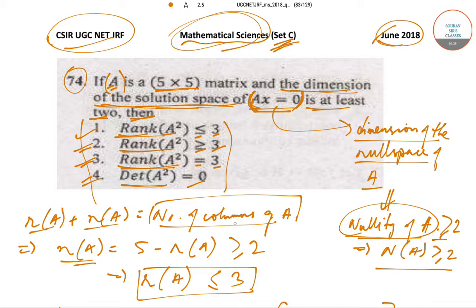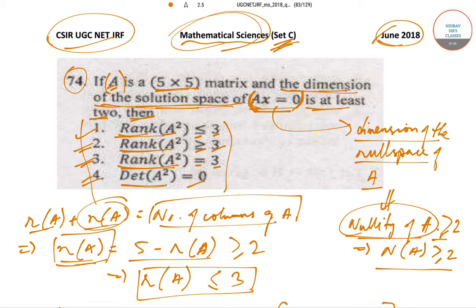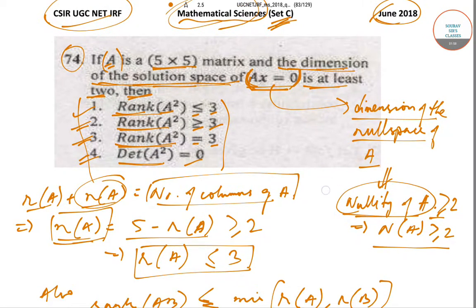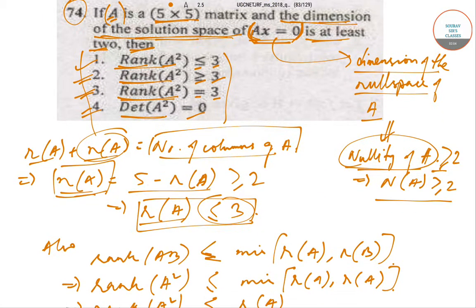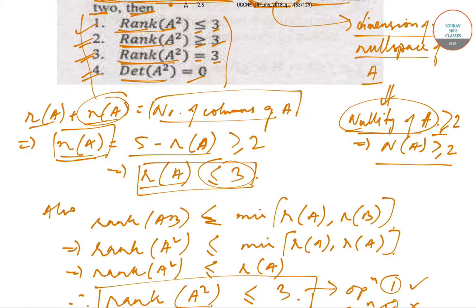Since A is a 5×5 matrix, the number of columns is 5. Rearranging: nullity(A) = 5 − rank(A). Since nullity(A) ≥ 2, we get 5 − rank(A) ≥ 2, which gives rank(A) ≤ 3.